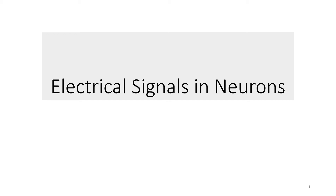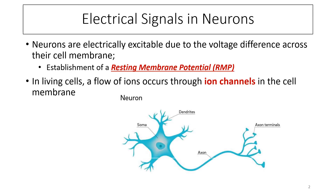In this PowerPoint we'll begin to look at how neurons create electrical signals, which act as a form of communication within the nervous system. Neurons are electrically excitable due to the voltage difference across their cell membrane. Voltage difference refers to a difference in charge from one side of the cell membrane relative to the other. The next couple of slides will look at how that voltage difference is established — this is known as the resting membrane potential.